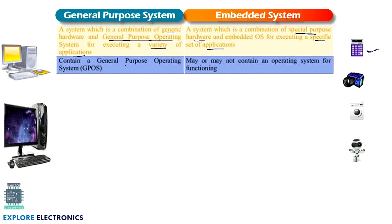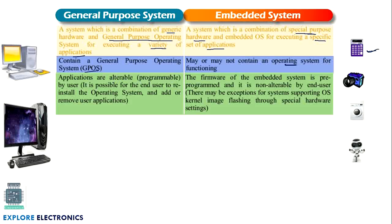With respect to the OS: in a general purpose system, our computer will have a general purpose operating system — we call it GPOS. In an embedded system we may or may not contain an operating system. In some advanced embedded systems nowadays we will have operating systems, whereas in earlier cases there were no operating systems at all. Applications are also alterable in a general purpose system, but in an embedded system the firmware is pre-programmed to perform a set of operations — it is non-alterable.